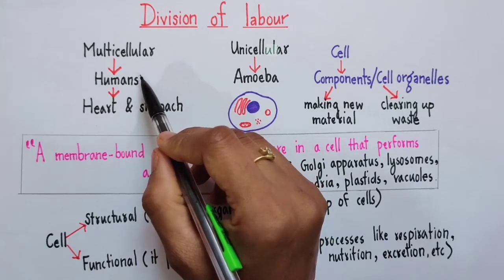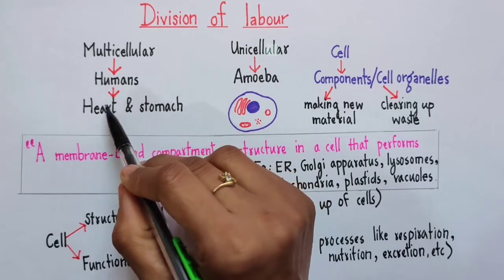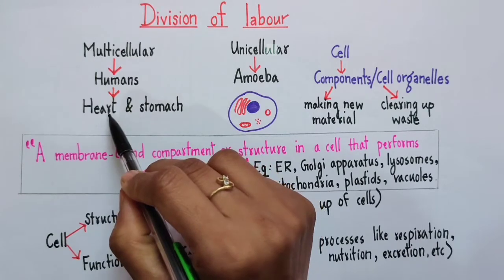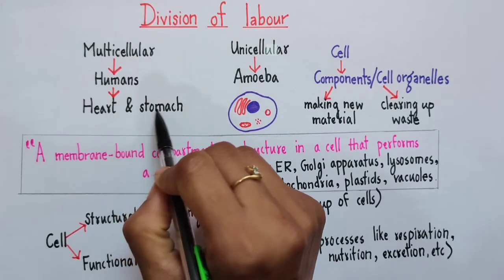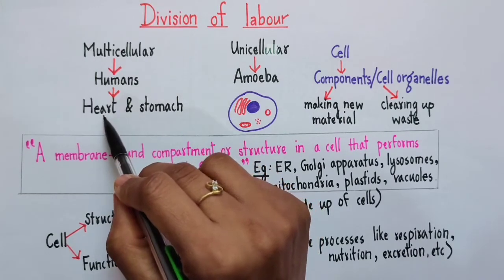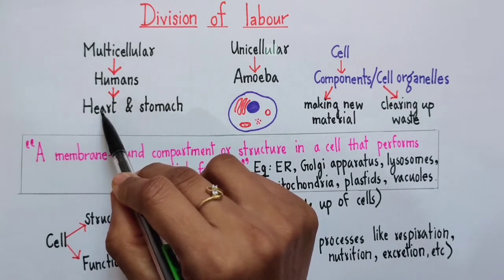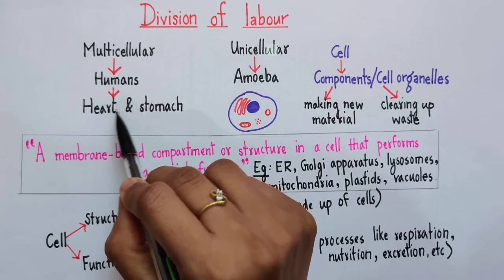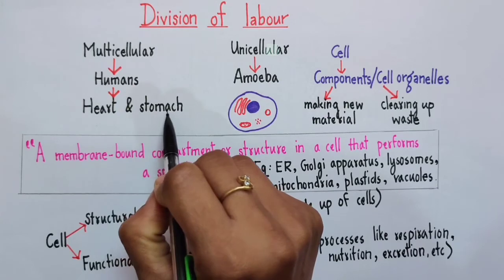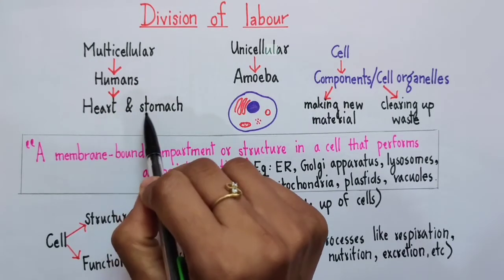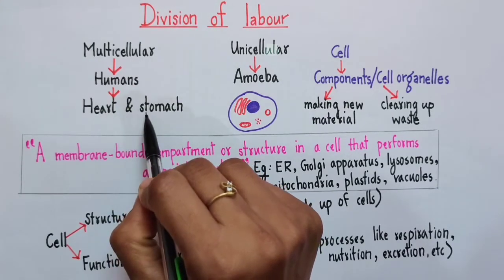Likewise if we just look at our internal organs, say for example heart and stomach, even they have a definite role to play in our body. The role of the heart is to pump blood, the role of the stomach is to digest food. By no chance can these two interchange their function.